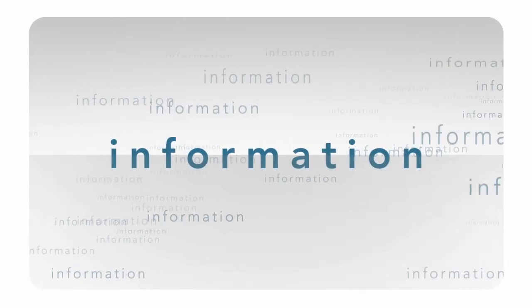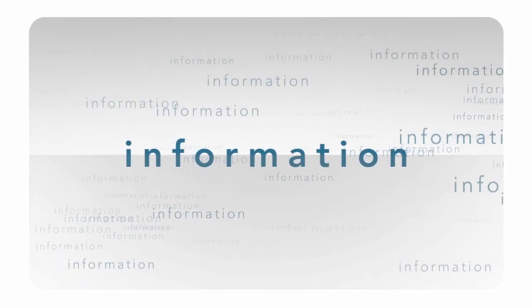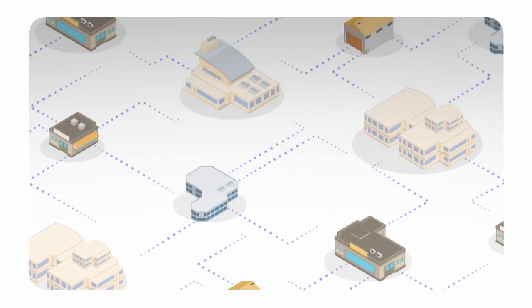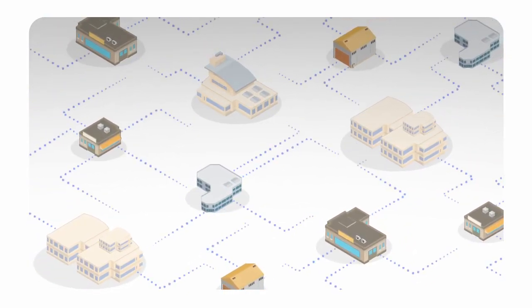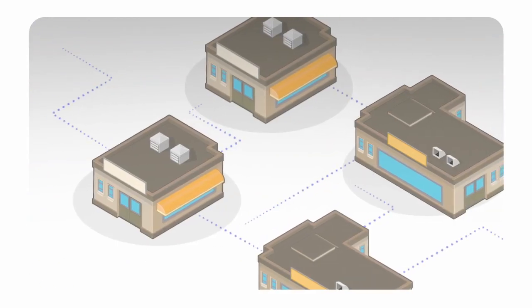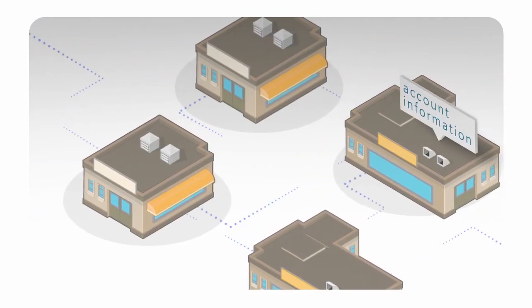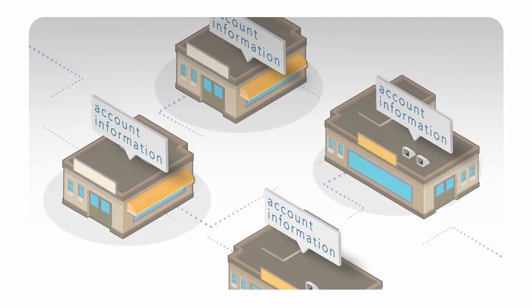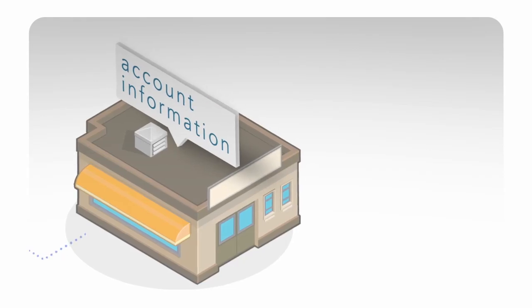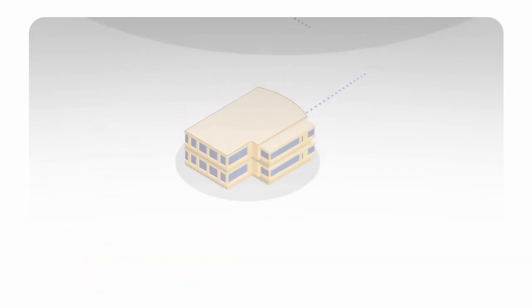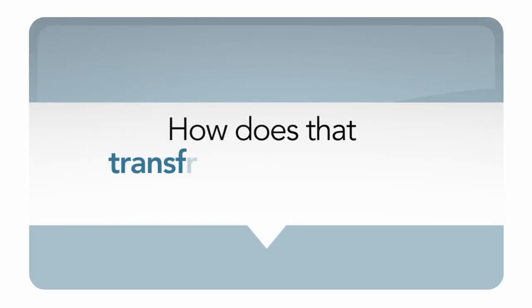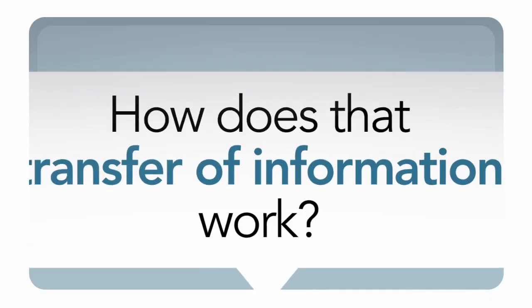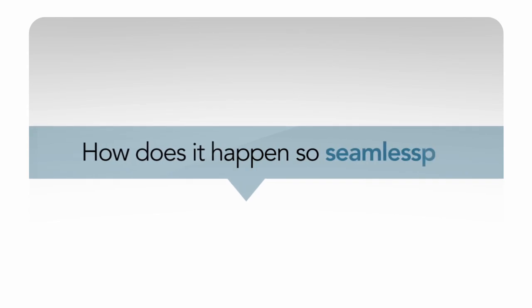Information provides the lifeblood of any organization. Each day, millions of bits and bytes of data transfer among business locations. This information ensures that banking customers, for example, can access account information from any branch, or that rural clinics can offer patients telemedicine links to system hospitals. But how does that transfer of information work? And more importantly, how does it happen so seamlessly?